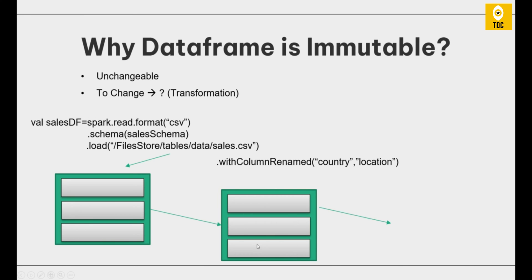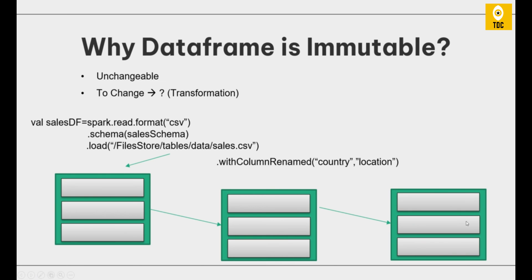Each operation you perform — whether it is rename, drop, or any arithmetic operation — creates a new DataFrame. The base DataFrame holds the full CSV data with all columns. A second DataFrame is derived from it with the column renamed. A third DataFrame is derived from the second with a column dropped. Each layer is a cloned, modified version, but the existing DataFrames are not changed. That is the beauty of immutability.